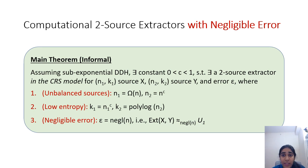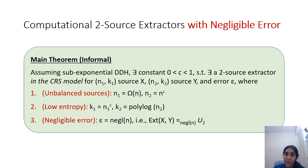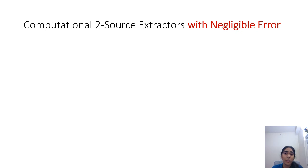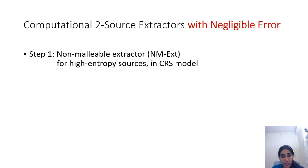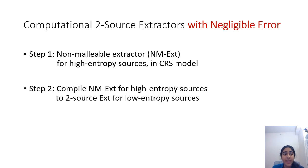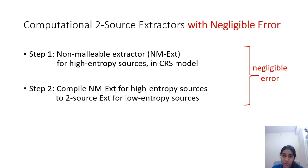In the computational setting, we have the following restrictions: the sources are efficiently samplable, and we only care about computational indistinguishability of the output from uniform. Note that we focus here on extracting a single bit of randomness, but our techniques can help obtain nearly k2 bits of randomness. Our construction of computational two-source extractors proceeds in two steps: first, we build a non-malleable extractor for high-entropy sources in the CRS model, and second, we compile this to a two-source extractor for low-entropy sources. Both steps give efficient constructions with negligible error.